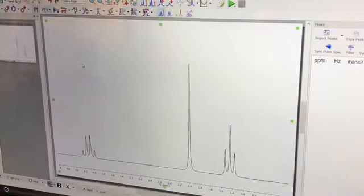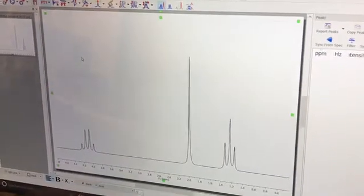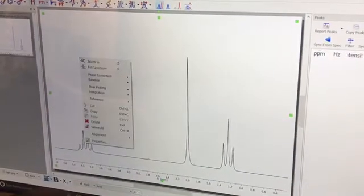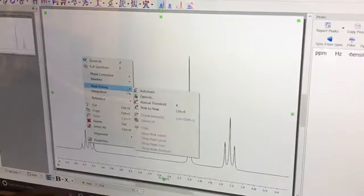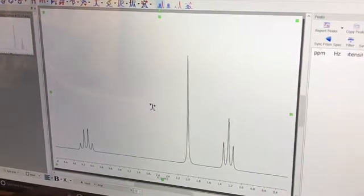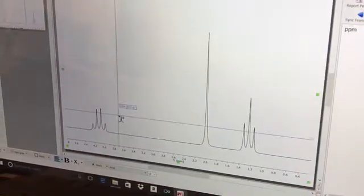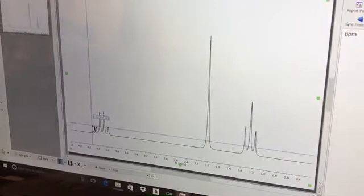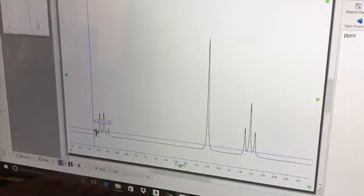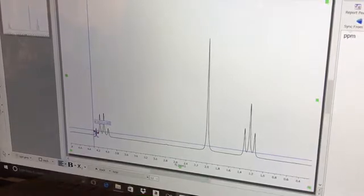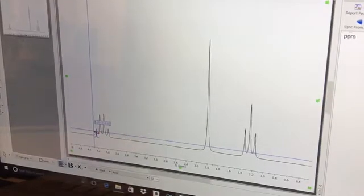The first things you want to do to analyze your data is right-click, go down to Peak Picking, and select Manual Threshold. You're going to place the crosshairs to the left and a little bit below the leftmost peak.